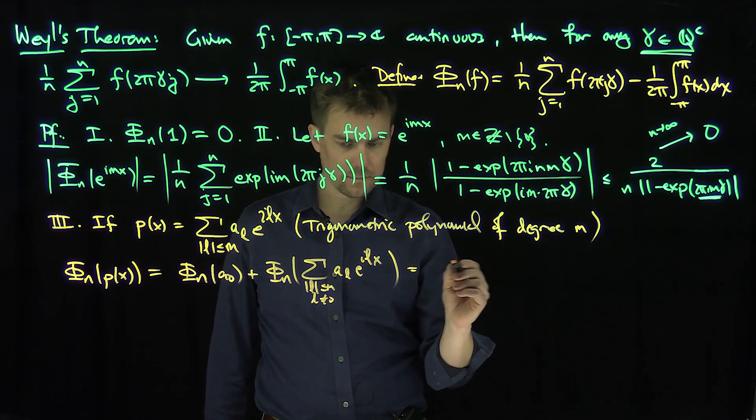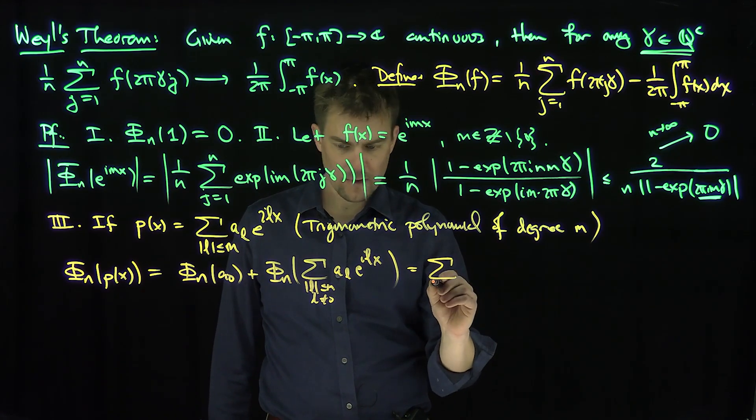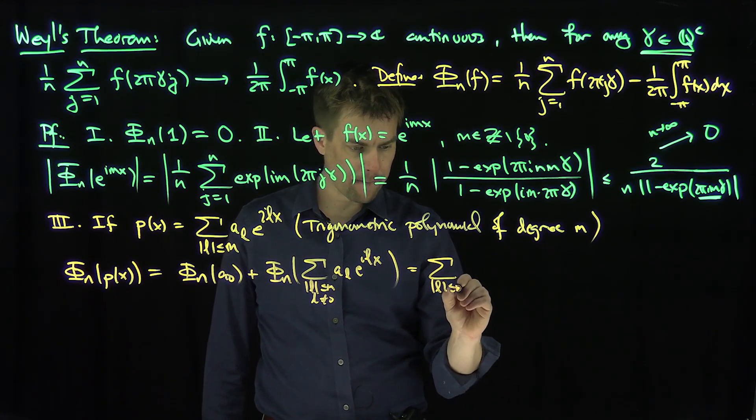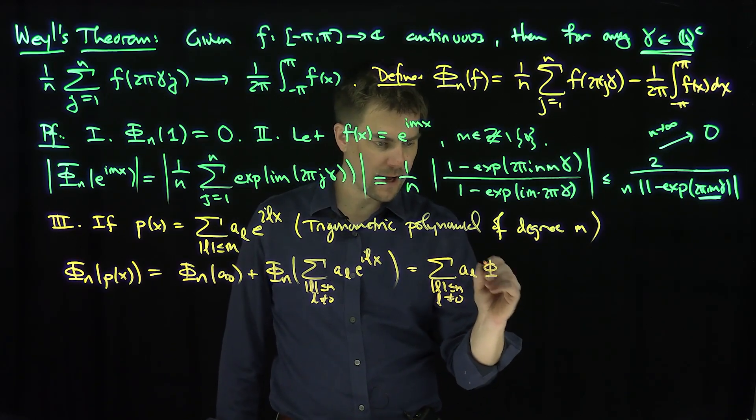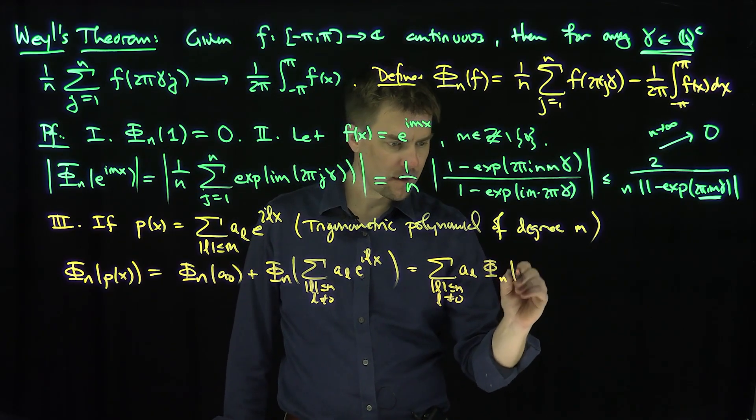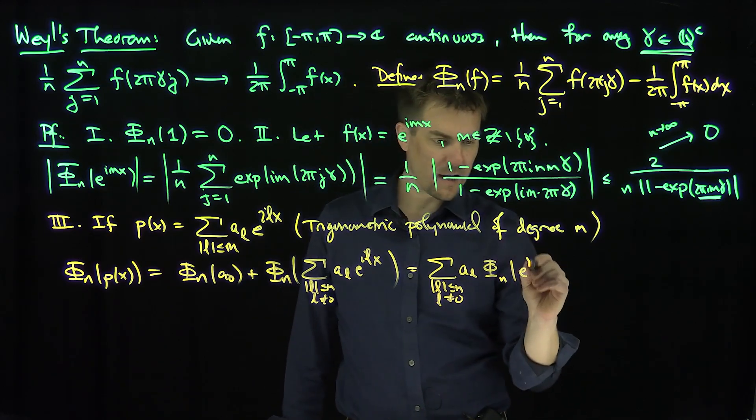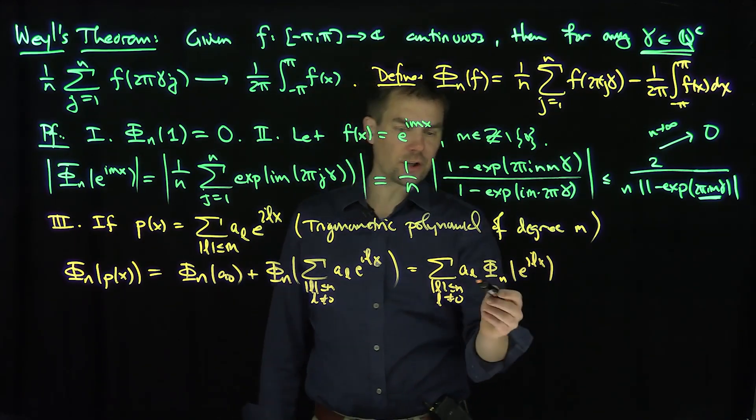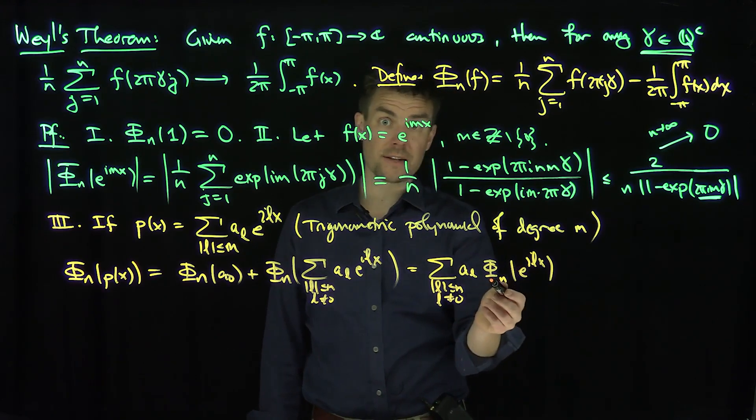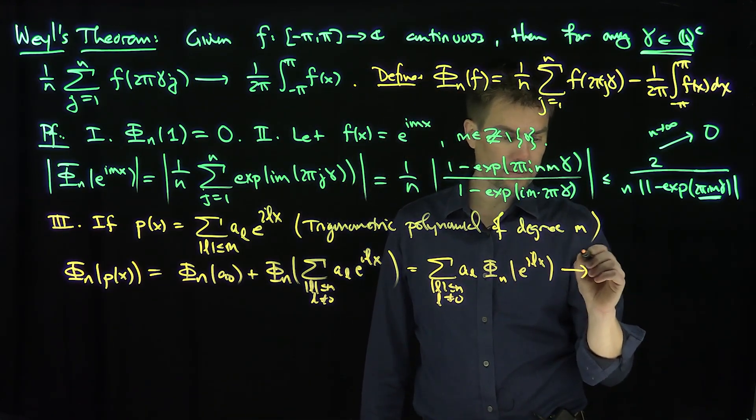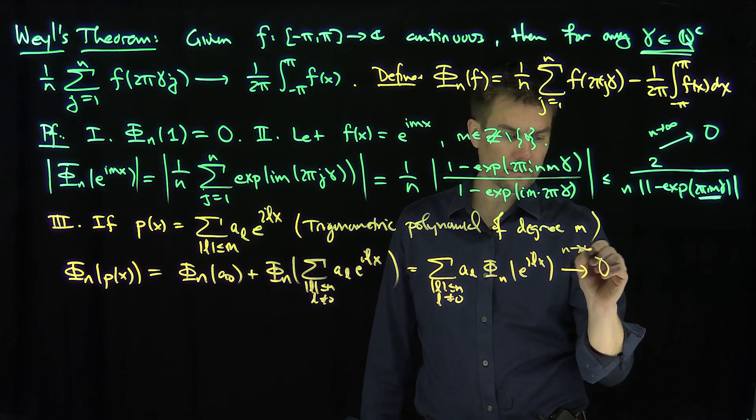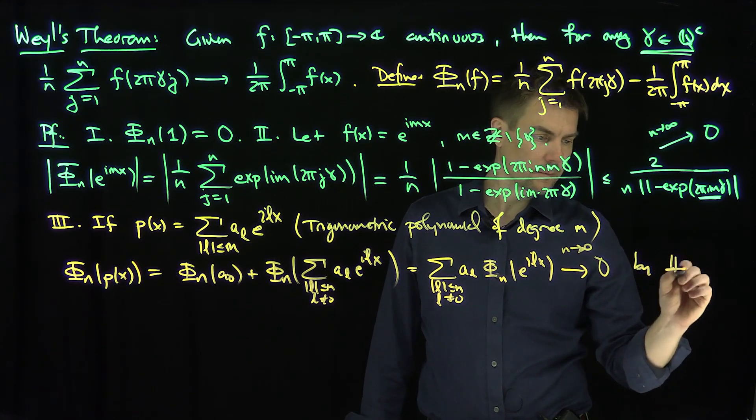And now this is going to be zero, and then plus the sum, l less than or equal to m, l not equal to zero, of a_l φ_n of e to the ilx, and now by part 2, I know that each of these terms goes to zero as n tends to infinity, and there's only a finite number of them, so this tends to zero by part 2, as n goes to infinity.